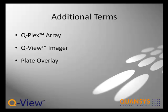It is the only imager specifically designed to be used as a system with QView software and QPlex arrays. Plate overlay refers to the diagram of the plate that is aligned by the user over the plate image. Product code is the alphanumeric code that defines parameters such as the number of spots per well and their positions, and the concentrations of each analyte in the calibrator, and the optimal curve fit settings.